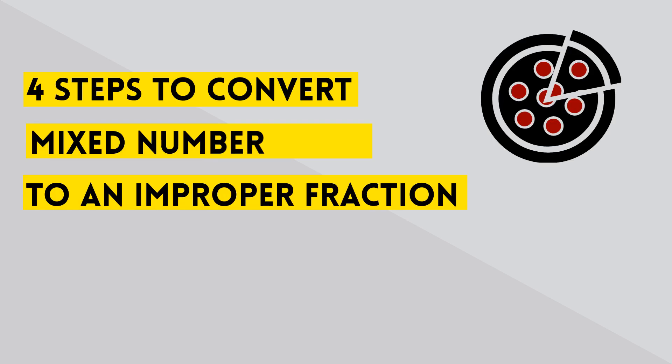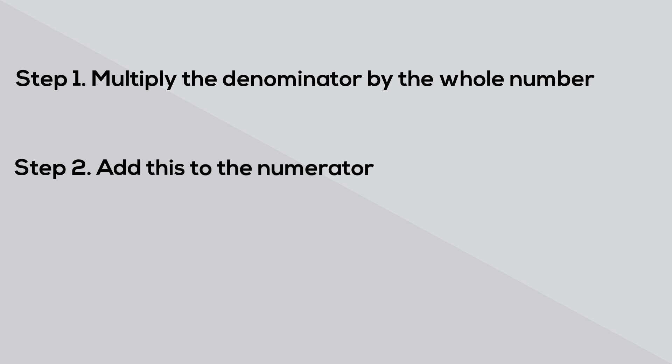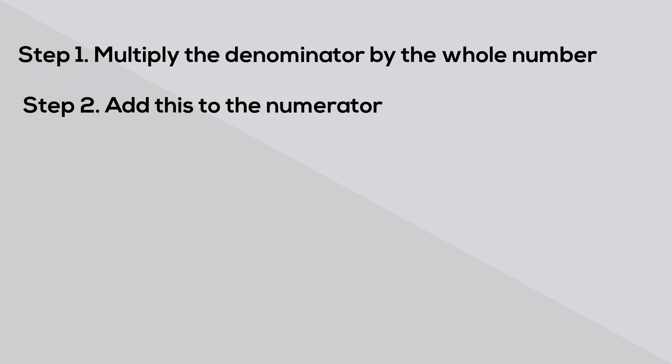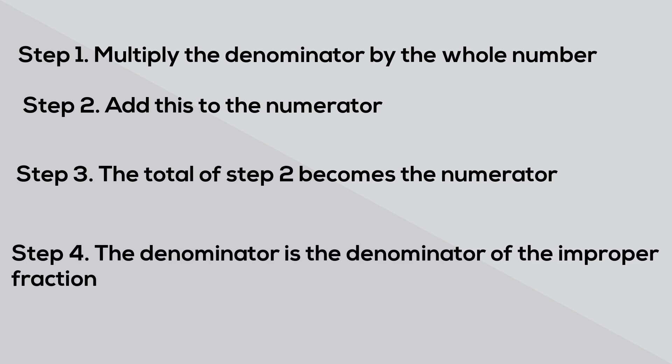You can convert a mixed number to an improper fraction by following these four steps. Step 1: multiply the denominator by the whole number. Step 2: add this product to the numerator. Step 3: the total from step 2 becomes the numerator, and step 4: the denominator of the mixed number becomes the denominator of the improper fraction.